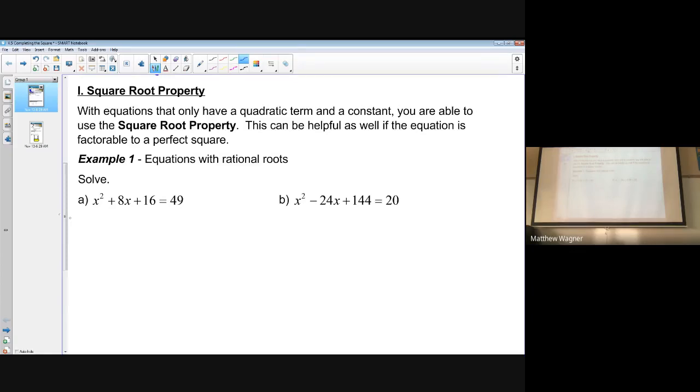So the first thing we're going to look at are some easier problems that are set up as perfect square trinomials. So when I look at example one, we have x squared plus 8x plus 16. I notice that I can factor that left-hand side. That is a perfect square trinomial. I can factor it as x plus 4 squared. It was a perfect square trinomial, so I can factor it as a square of a binomial.